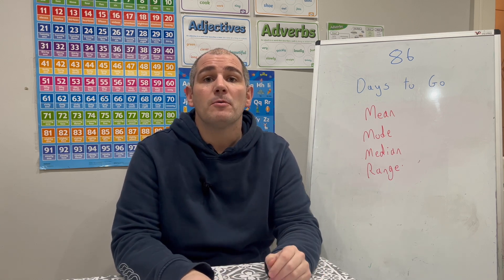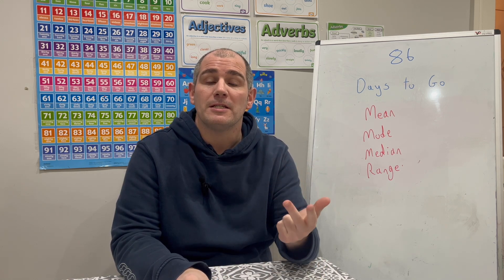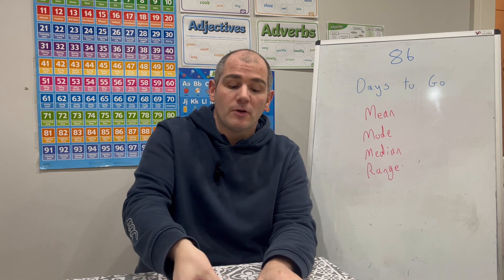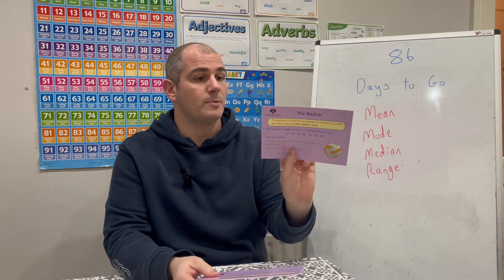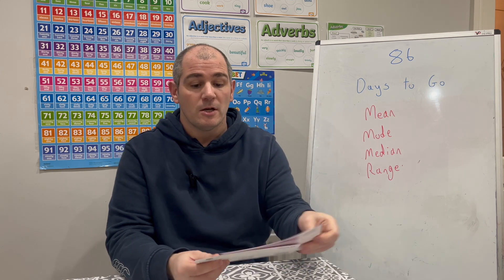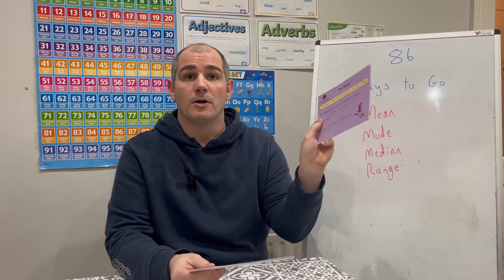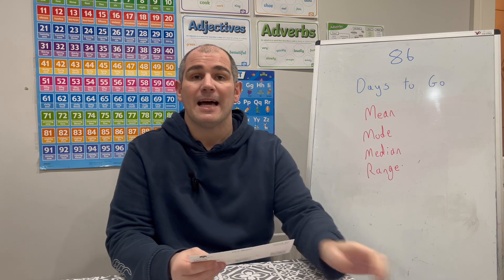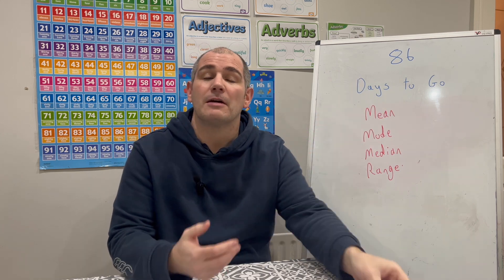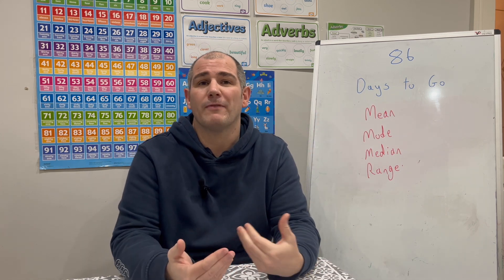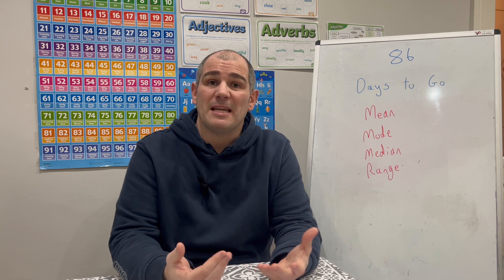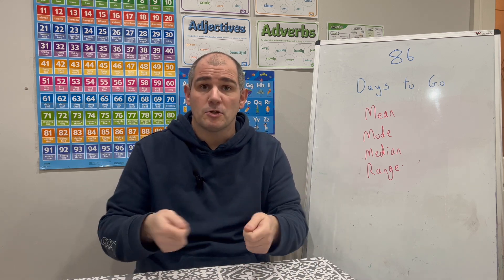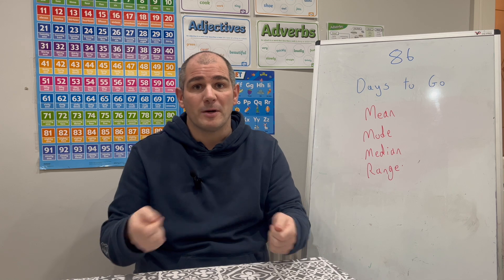In today's video, we're going to focus on the mean, the mode, the median and the range — so the averages and the range. If you've got the revision cards, these will be useful for you as well. Card number nine is the median, the mode is card number eight, the range is card number 11, and the mean is card number 10. Those revision cards will be really useful if you're revising, and it's quite useful to get friends or family to test you on those to remember which ones are which.